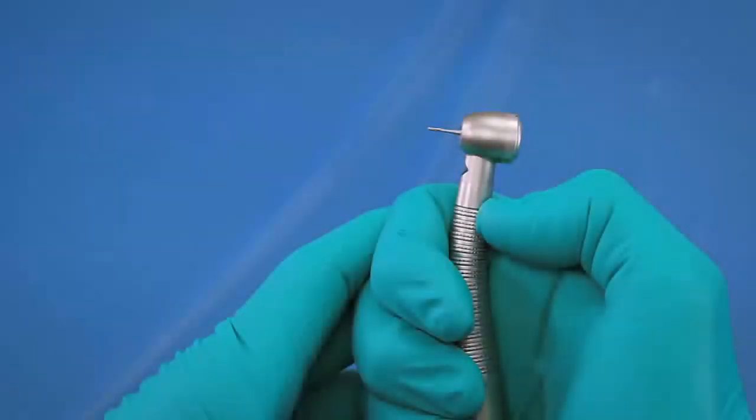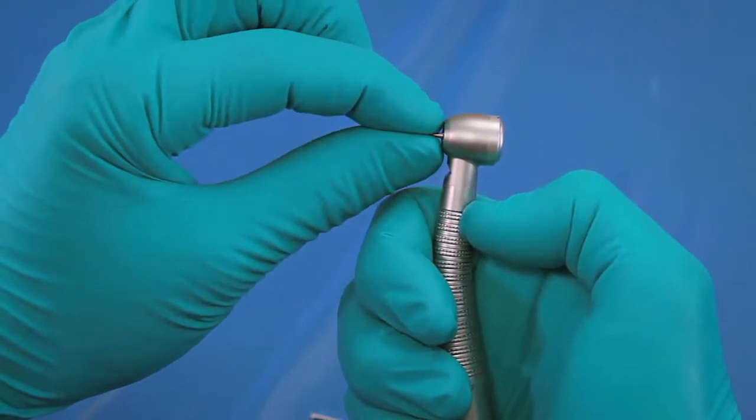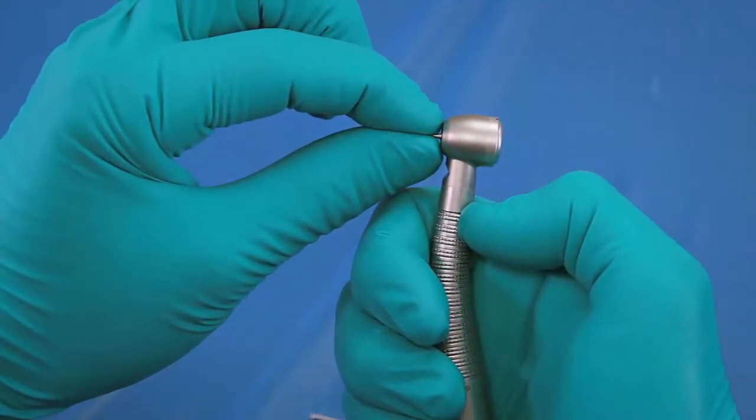To remove a burr from the handpiece, grasp the free end of the burr. Lightly pull on the burr away from the handpiece.